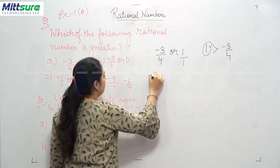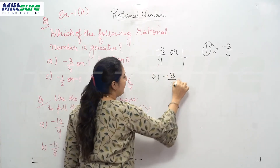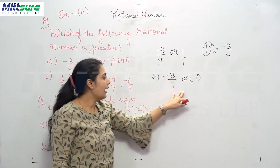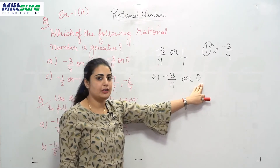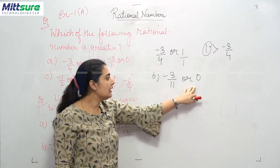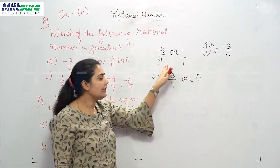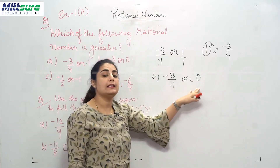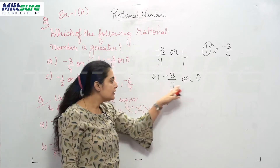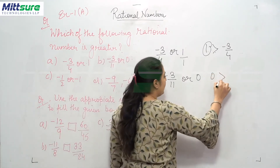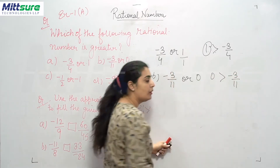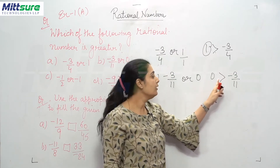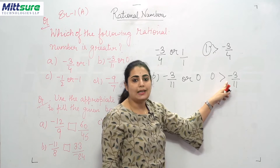For part (b): minus 3 upon 11 or 0. We have a negative rational number and 0. All negative integers have a lesser value than 0, so 0 is greater than minus 3 upon 11, because minus 3 upon 11 is a negative rational number.